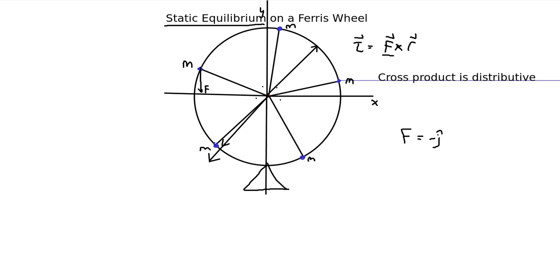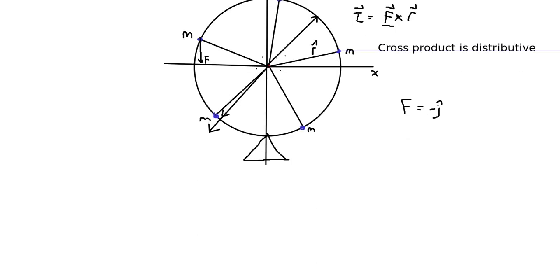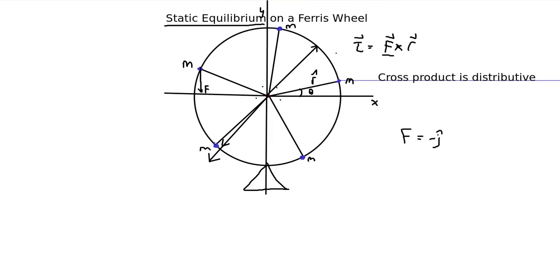Now, so we want to assume that, or we want to prove that no matter how I position these masses, as long as they're equally spaced, that I will have static equilibrium. So, let's say the position vector, and let's just say that this ferris wheel is the unit circle, right. And we can assume that as well. So, let's say we have some position vector for this mass, right.